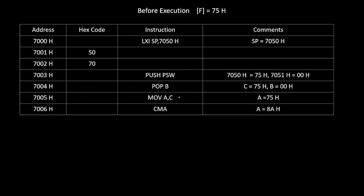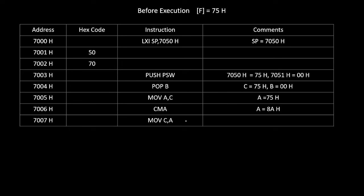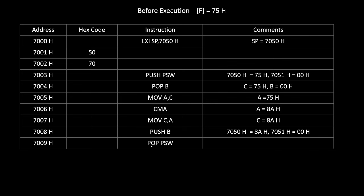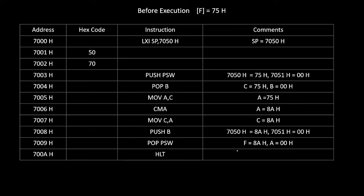Now we perform the reverse operation. We write MOV C, A so C becomes 8AH. Then we write PUSH B, copying C and B back to 7050H and 7051H — so 7050H becomes 8A and 7051H becomes 00. Then we write POP PSW: these values get copied into the F and A registers, so F becomes 8AH and the accumulator becomes 00H. We have completed our task — 8A is now inside the flag register. Finally, we terminate the program with HLT.